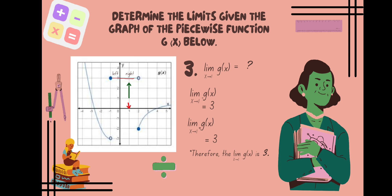For Number 3, we find the limit of g of x as x approaches positive 1. We locate x equals positive 1 on the right side of the x-axis. Observing the graph, the limit of g of x as x approaches 1 from the left is equal to 3. The limit from the right is also equal to positive 3. Since both limits are equal, the limit of g of x as x approaches 1 is positive 3.